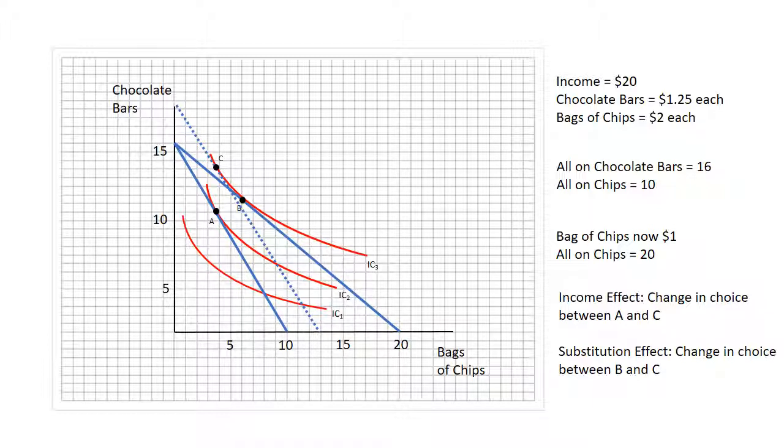That's the income and substitution effects in an example of a budget constraint that involves two goods and a fixed amount of income that the person is consuming.